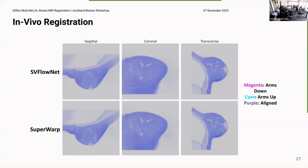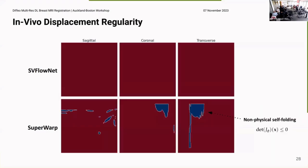So these are the results, the image results. You see a lot of areas of agreement and small regions where we have false positives or negatives. And then the displacement regularity, this is just taking a slice. You can see that SuperWarp produces regions where you have less than or equal to zero. So you have those non-physical self-folding regions. Whereas by construction, SVFlowNet is diffeomorphic, so it's guaranteed you won't get those regions.